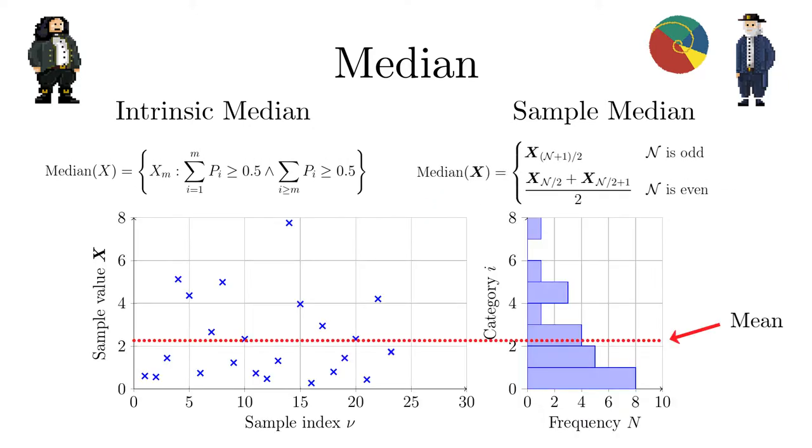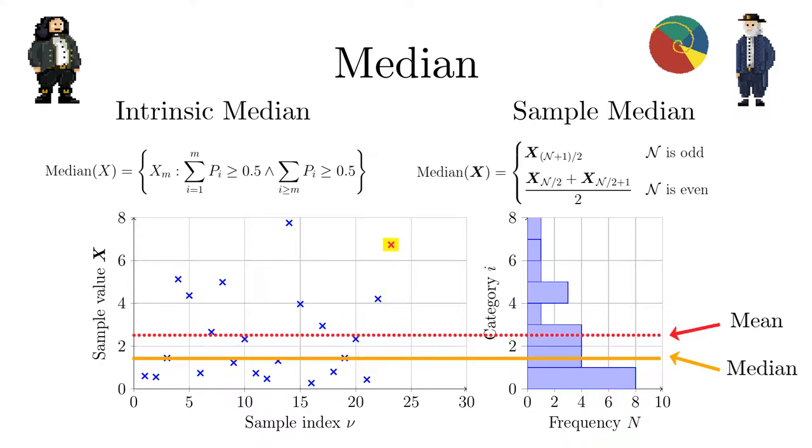In contrast to the mean the median is resilient against outliers. A single erroneous measurement can severely distort the sample mean while a sample median remains unchanged.